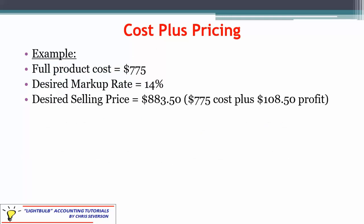For example, if your full product cost is $775 and your desired markup rate is 14%, then you have $775 plus $108.50 of profit — that's the 14% markup. Adding those together gives you $883.50 as your desired selling price.